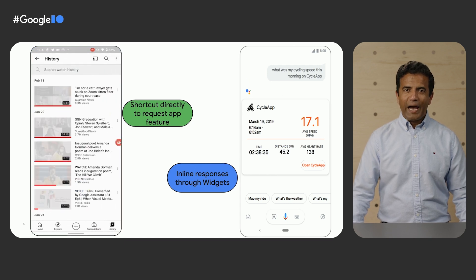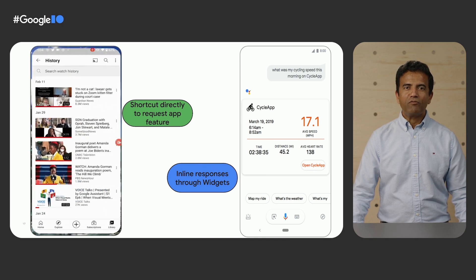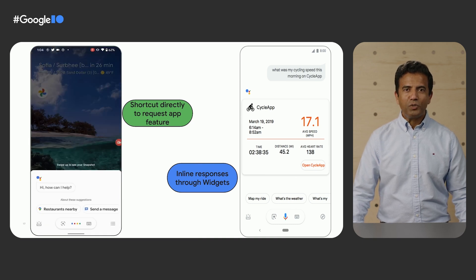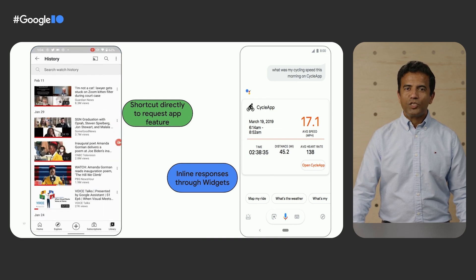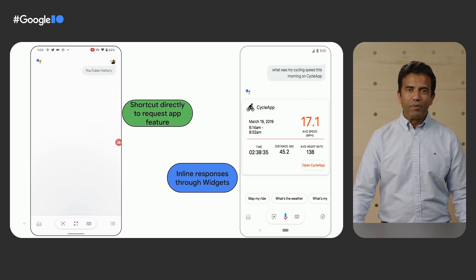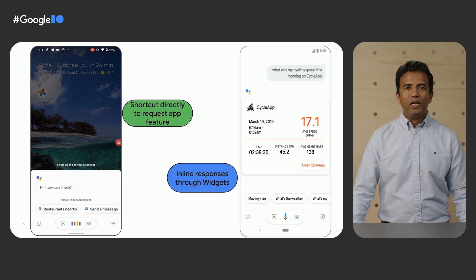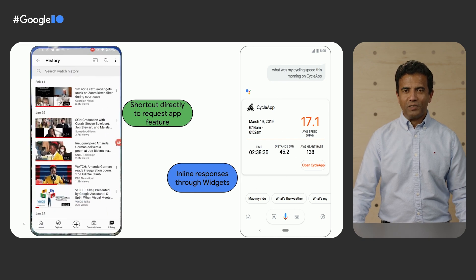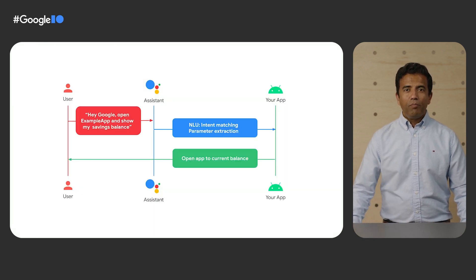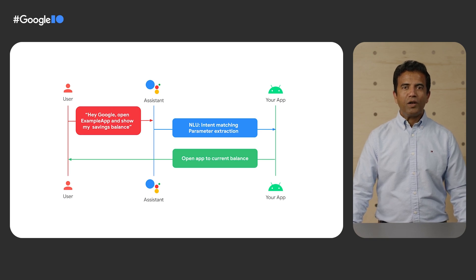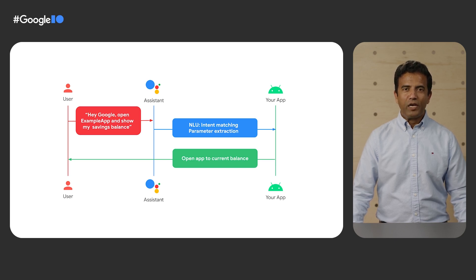The first way launches your app with an Android intent that contains parameters extracted from the user's query, which fast-tracks the user to the appropriate spot in your app to complete the rest of the journey. The second displays an Android widget from your app within Assistant, which provides a quick inline response. You can also add a spoken response to your widget to give it a more conversational feel. Because Assistant handles natural language modeling and then uses existing components of your app — like Android intents and widgets — to fulfill those requests, developers can enable App Actions quickly.